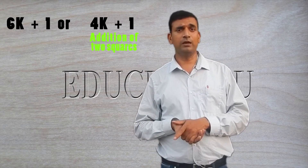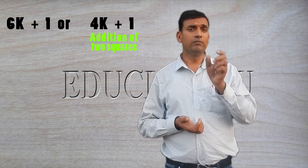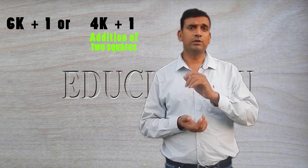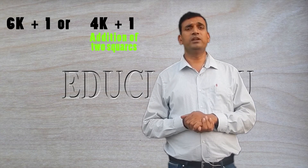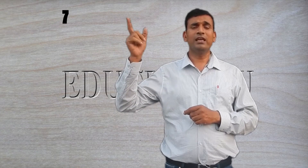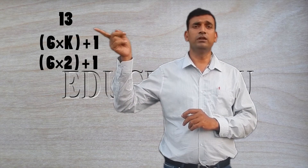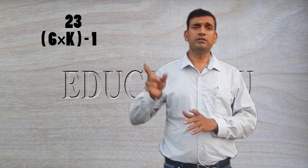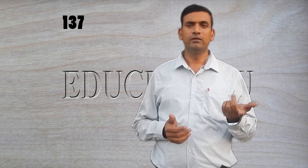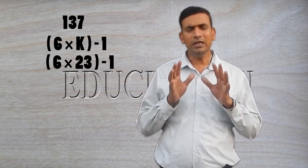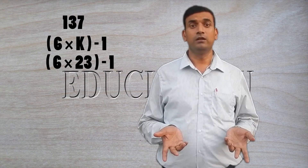When the prime number is in the form of 4K plus or minus one, only in the case of 4K plus one, that number is the addition of two squares. Let us try examples when it is in the form of 6K plus or minus one. Take the example of 7: it is 6×1 + 1. Take 13: it is 6×2 + 1. Take 23: it is 6×4 − 1. Take 137: it is 6×23 − 1, which is 138 − 1 = 137. Any prime number is in the form of 6K±1. But that doesn't mean that every number in the form of 6K±1 is prime — it is not true. The truth is: any number which is prime can be expressed in the form of 6K±1.